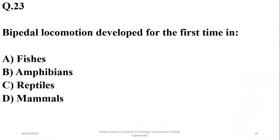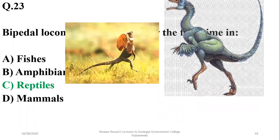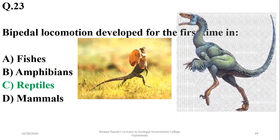Question twenty-two: bipedal locomotion developed for the first time in reptile groups. Ancient reptiles showed bipedal locomotion, and certain recent reptiles also exhibit bipedal locomotion at some points. The correct option is charlie.